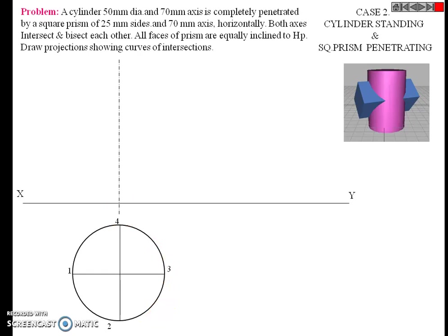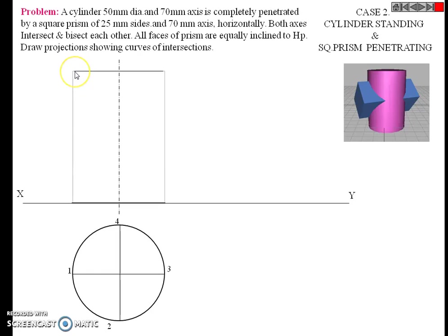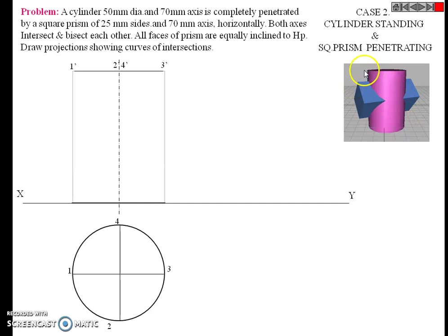After naming the four points, draw the front view. Take the projection of this top view into the front view. Draw the center line. This axis side of the cylinder is 70 mm, so draw the 70 mm front view. Points 1, 2, 3 are visible from the observer's side. Points 1, 4, 3 are invisible — so 1-dash, 2-dash, 3-dash are visible and 4-dash is invisible.